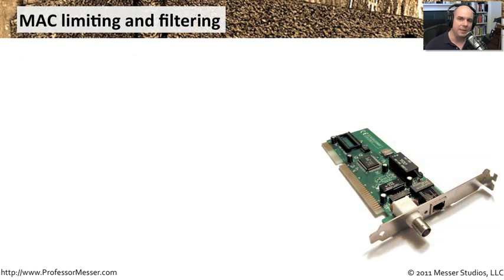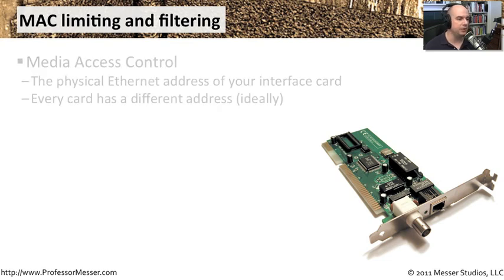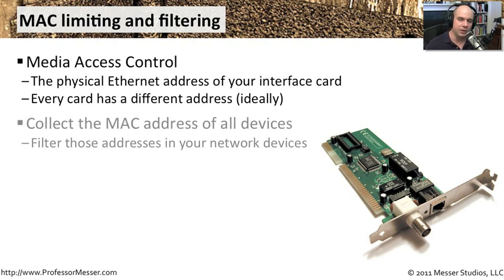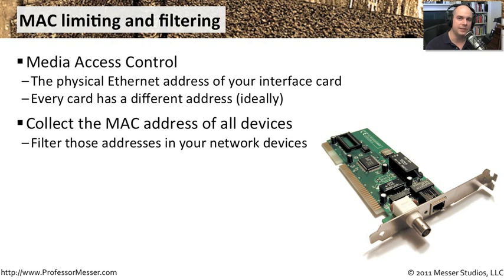One way to restrict access is to limit what machines are able to access the network. A common way to do this is through MAC filtering or MAC limiting — MAC standing for media access control. This is the physical interface on your wireless card or ethernet card that identifies that single piece of hardware. Generally, all cards have different addresses. To manage this, you need a MAC access control list of every device, then define filters inside your network devices to say only these machines have access to this physical network. It's just another layer of security.